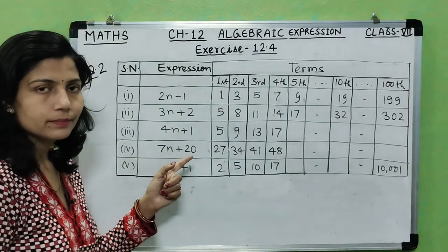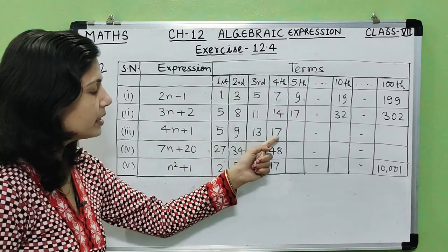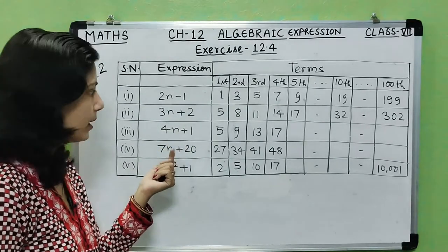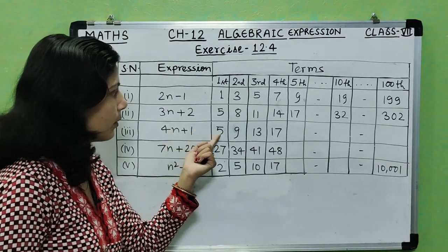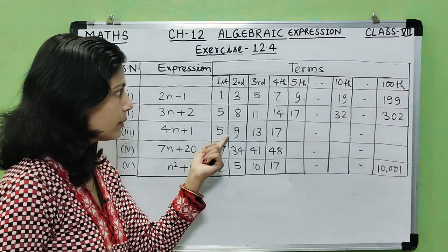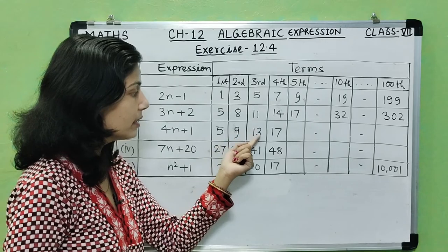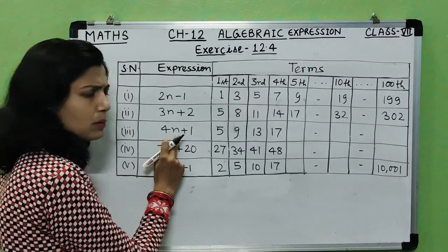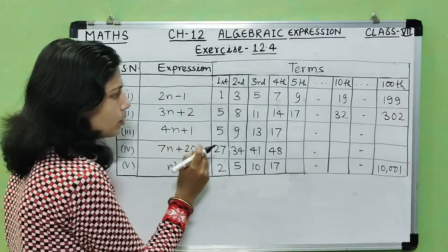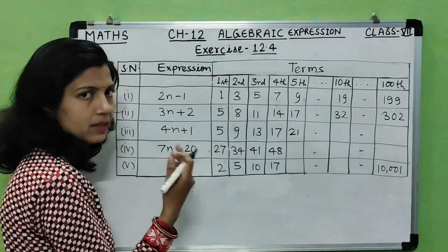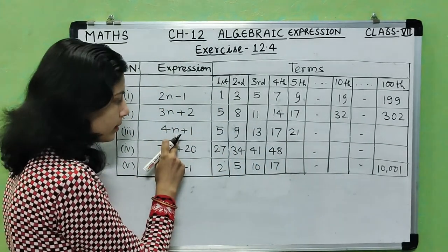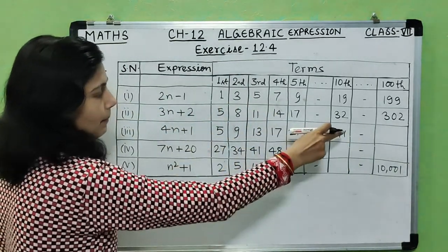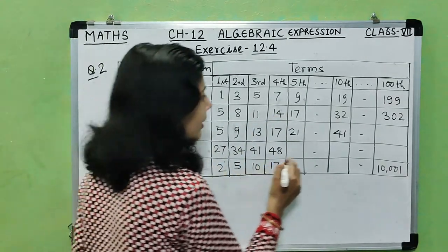For the expression 4n plus 1, the pattern is 5, 9, 13, 17. When n equals 1: 4 into 1 plus 1 equals 5. When n equals 2: 4 into 2 plus 1 equals 9. For the fifth term, n equals 5: 4 into 5 plus 1 equals 20 plus 1 equals 21. For the tenth term: 4 into 10 plus 1 equals 40 plus 1 equals 41. For the hundredth term: 4 into 100 plus 1 equals 401.